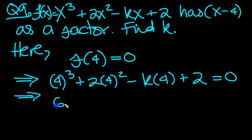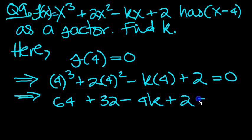So what have we got then? 4 cubed, that's 64, plus 2 times 4 squared, 2 sixteenths are 32, minus 4k plus 2 equals 0.